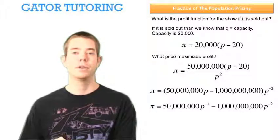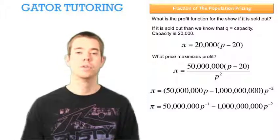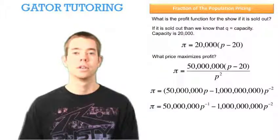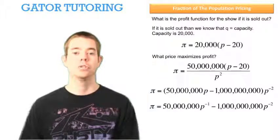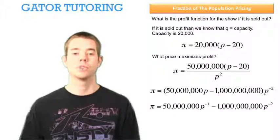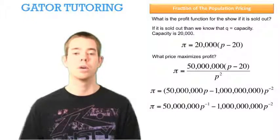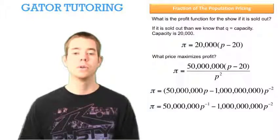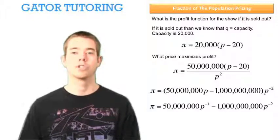When I multiply 50 million P times P to the negative 2, I add exponents. So 1 minus 2 is going to give me negative 1. So I get 50 million P to the negative 1 minus 1 billion P to the negative 2. I've just distributed that through.